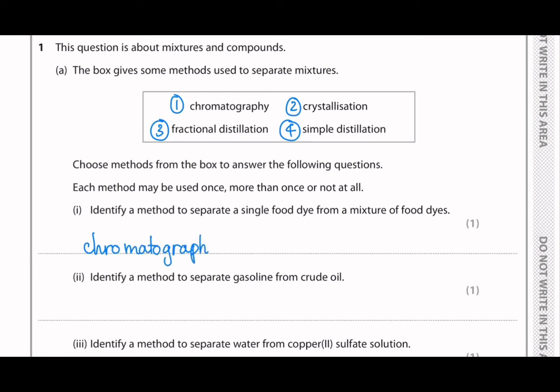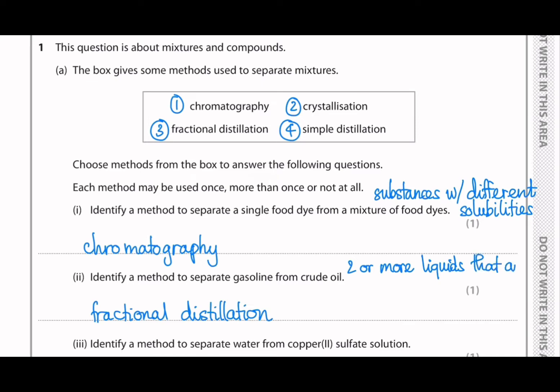And why the answer is chromatography is because food dyes are substances with different solubilities. And the second prompt is identify a method to separate gasoline from crude oil. So the answer to this question is fractional distillation. Because here we have crude oil, which is a mixture of miscible liquids, which means liquids dissolve in liquid. So fractional distillation is a perfect method for this case.